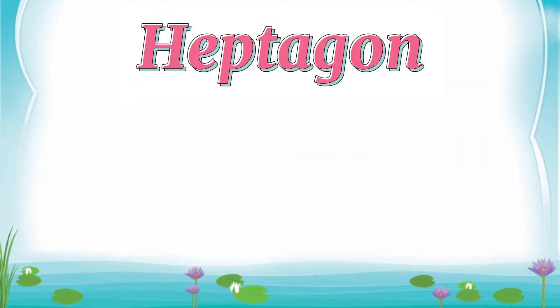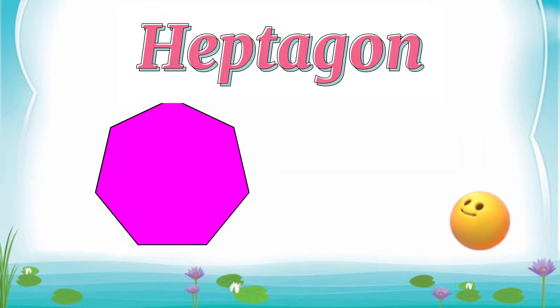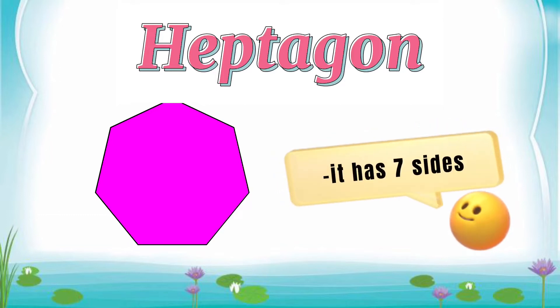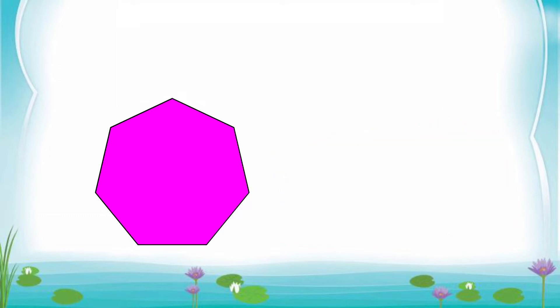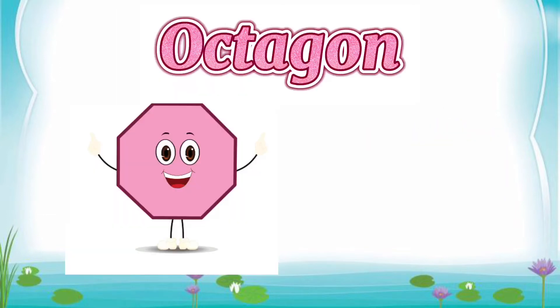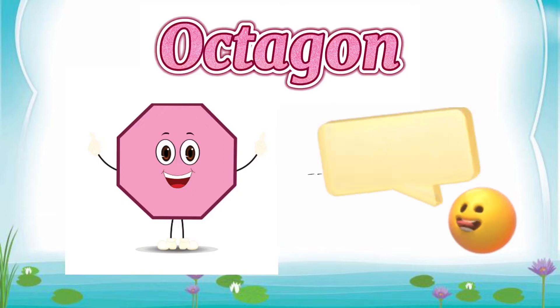Heptagon — it has seven sides. Octagon — it has eight sides.